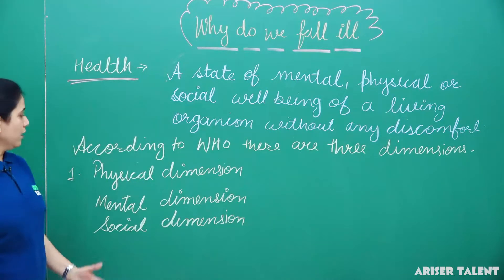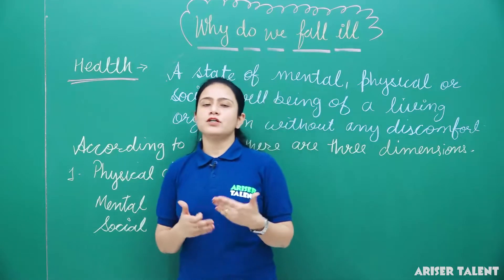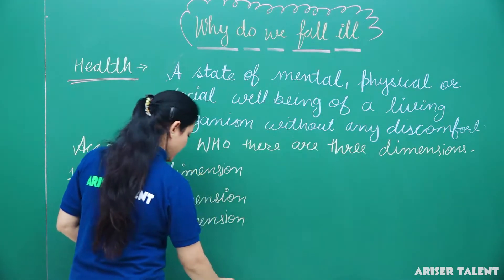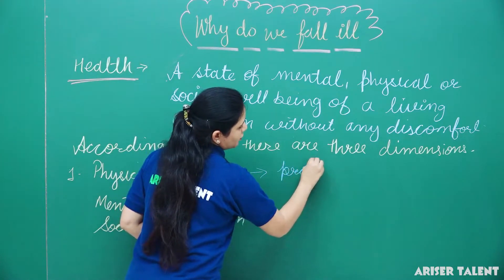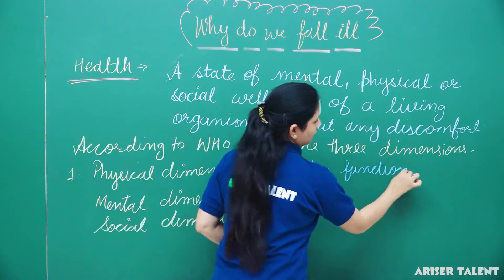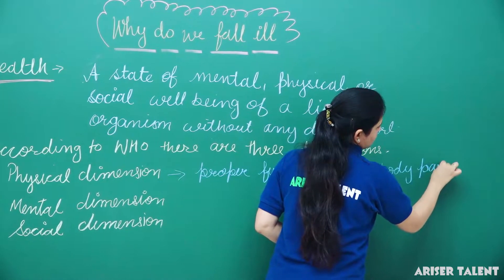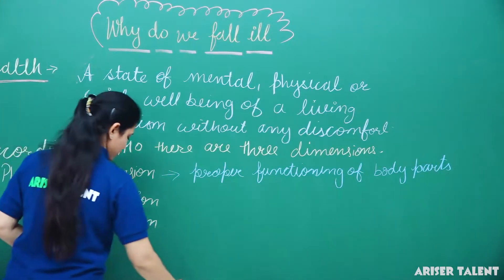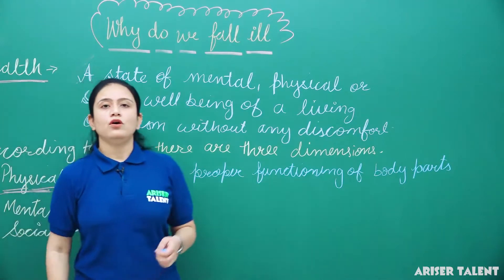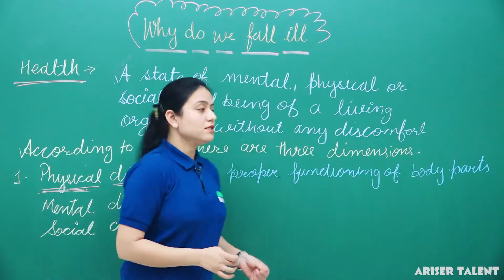Physical dimension means the proper functioning of all body parts. All the organ systems are made up of different organs — if they are all working properly and in the correct manner, that is the physical dimension of health.